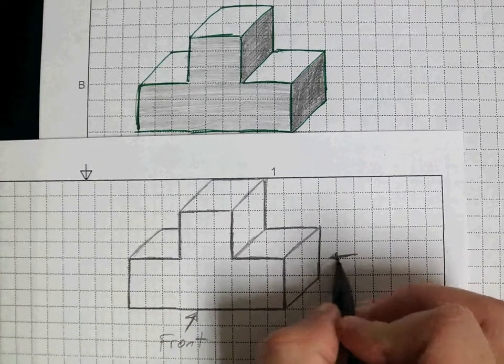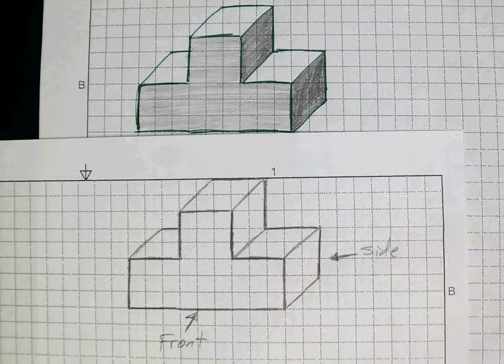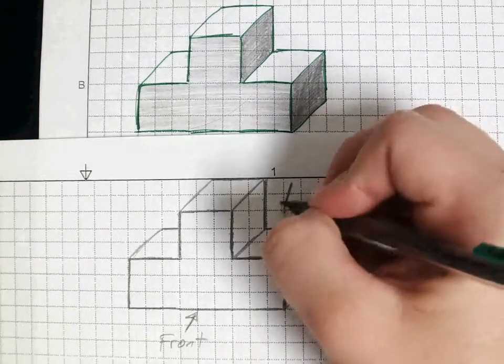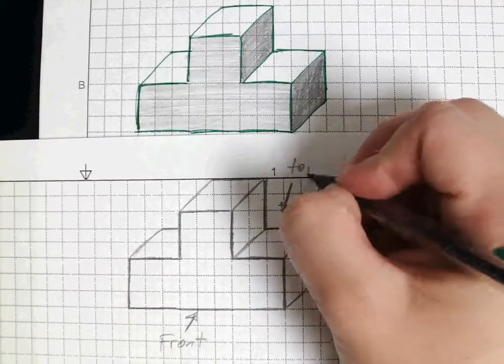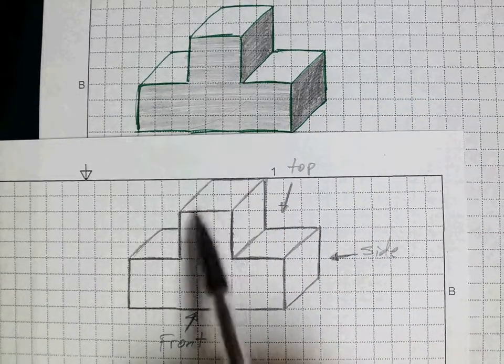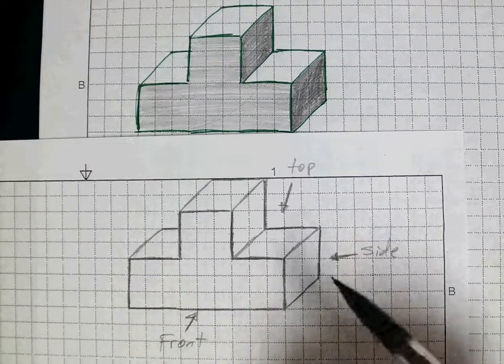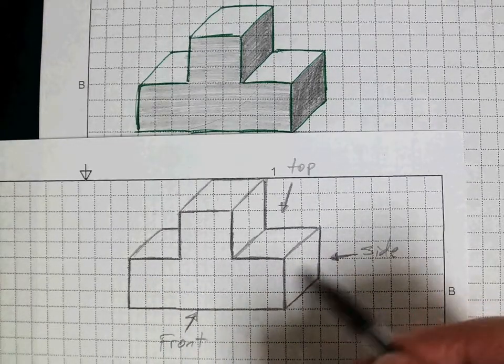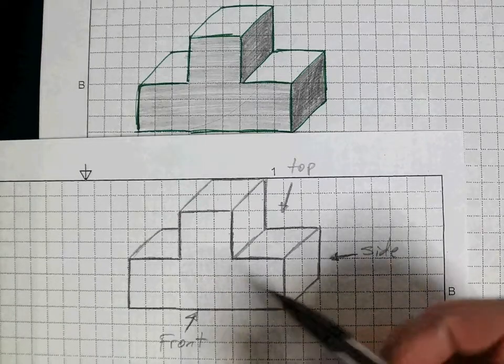And looking down at it this way is the top. Whenever we do tonal shading, you leave the tops blank, so all three of these areas would be blank. And then we shade the sides really dark, and then the front is kind of halfway.